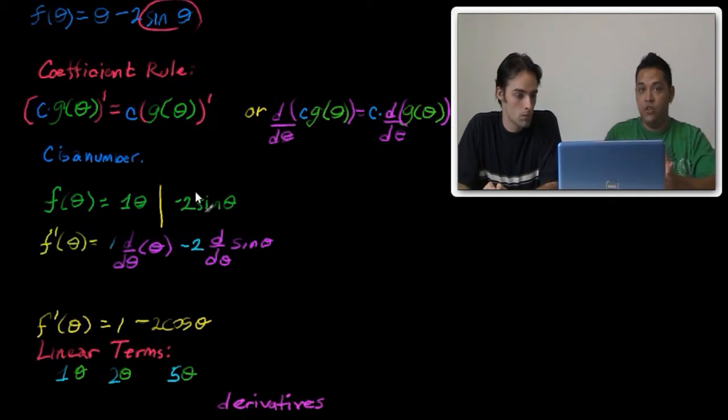So what we used was the coefficient rule. And the coefficient rule allows us to take out a c, in this case c would be a constant, take it outside of the derivative, like we did right here. Notice that the c is outside what we're taking the derivative of, and then just take the derivative of that f of x.